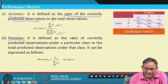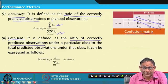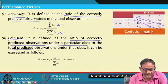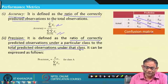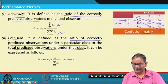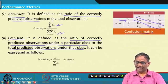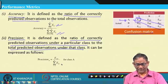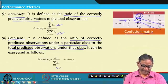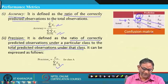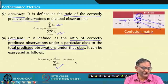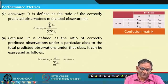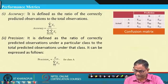Another metric is precision, defined as the ratio of correctly predicted observations under a particular class to the total predicted observations under that class. For class A, precision is E_AA divided by (E_AA + E_BA + E_CA), summed over all classes. You want both accuracy and precision to be high.